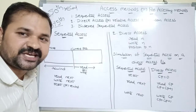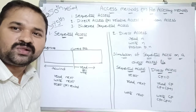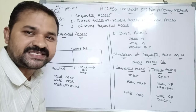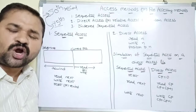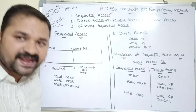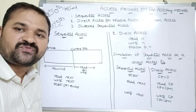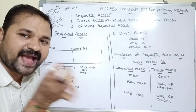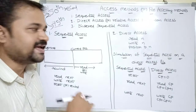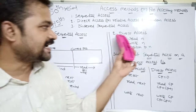The major advantage of sequential access is that it is the simplest technique. However, the major disadvantage is it is not possible to access any record directly, which means it will take more time to access a specific record. We can overcome this problem with the help of the second technique.